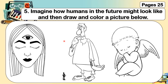Have you seen a human having three arms? Or have you seen a human having three eyes? So, this is an example. You can draw any, or you can choose one from this picture — one only. Then you need to color it after. Once again, imagine how humans in the future might look like. You can draw one from here, or you can draw your own example.